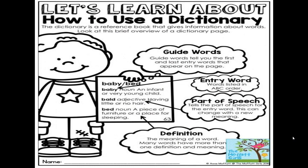Now we're going to look at how to use a dictionary. Content area vocabulary is normally in a glossary, but a glossary is just a mini dictionary. The dictionary is a reference book that gives us information about words. Look at this brief overview of a dictionary page. You have guide words — they tell you the first and last entry words that appear on the page. For example, guide words 'baby' and 'bed.' Then we have the entry word, listed in alphabetical order.